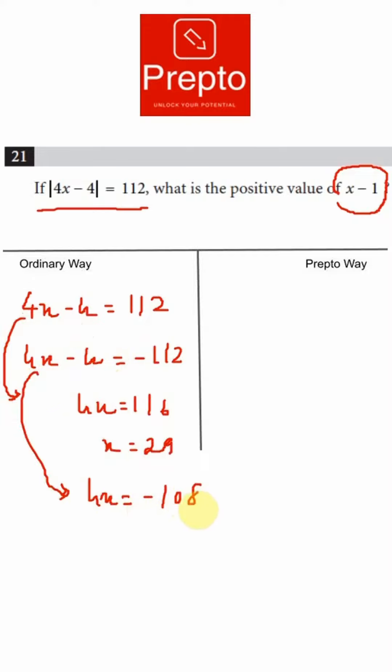So x minus 1 in either of the cases will be plus 28 or minus 28, and the modulus or positive value of that will always be plus 28. So that's your answer.